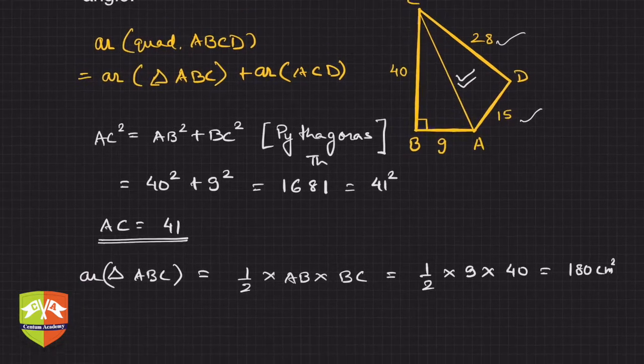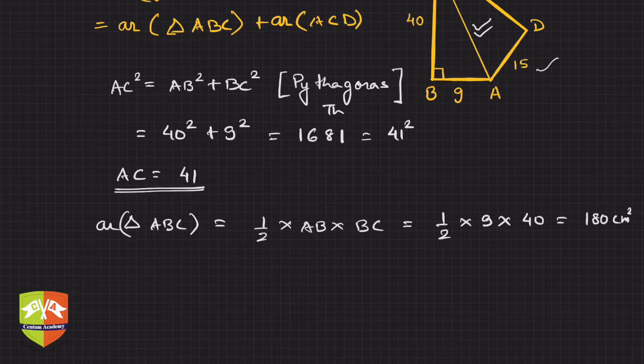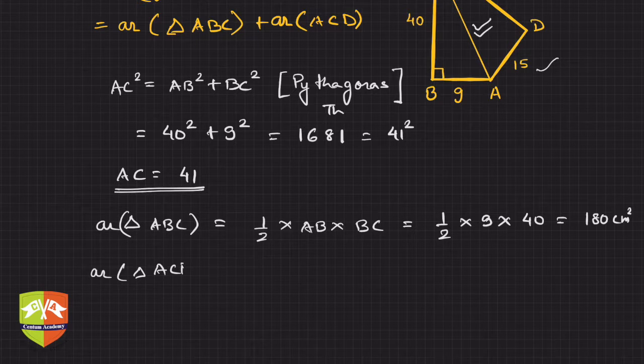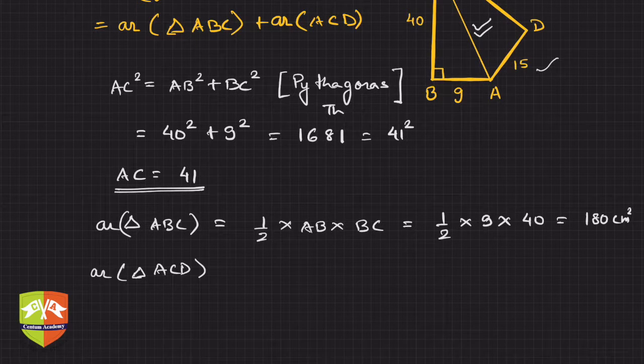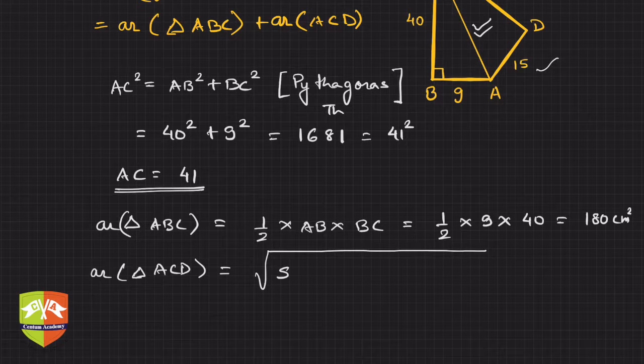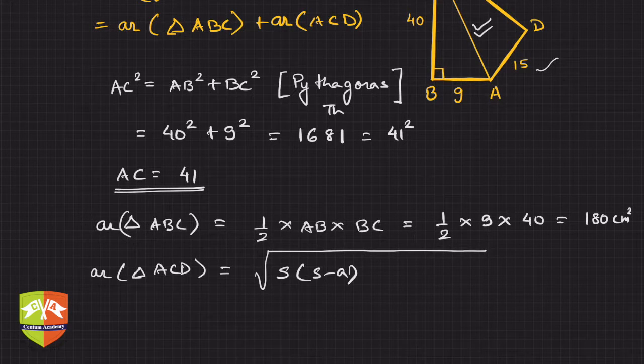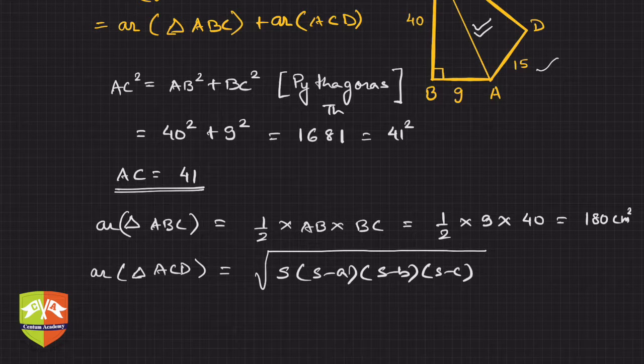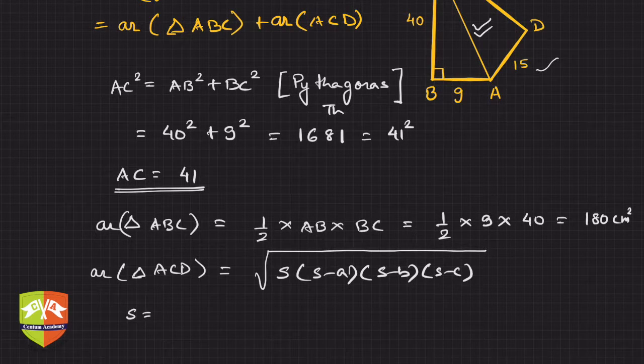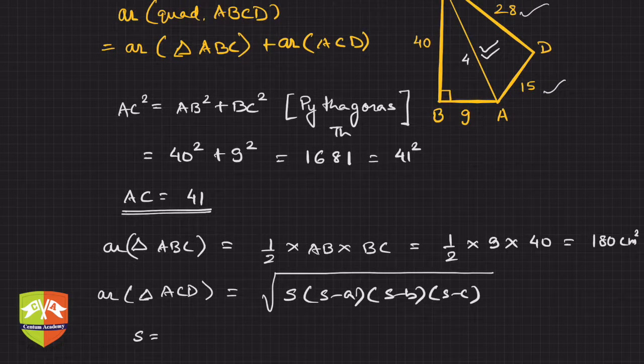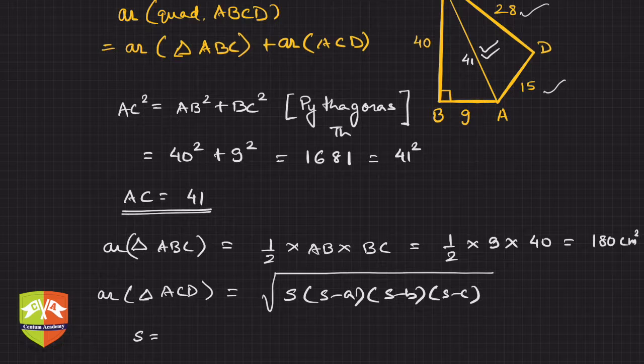We got the first triangle's area. Now let's find the area of triangle ACD. Heron's formula will come to the rescue: root of s(s-a)(s-b)(s-c). The semi-perimeter s is (41 + 15 + 28)/2, which is 84/2, equal to 42.